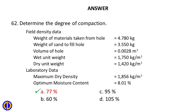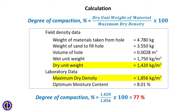Answer: A. 77%. Calculation: Degree of compaction equals dry unit weight of material divided by maximum dry density times 100. 1,420 divided by 1,856 times 100 equals 77%.